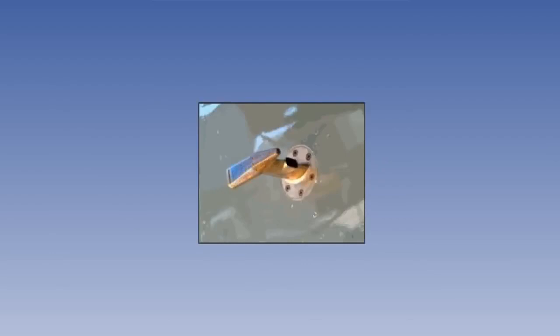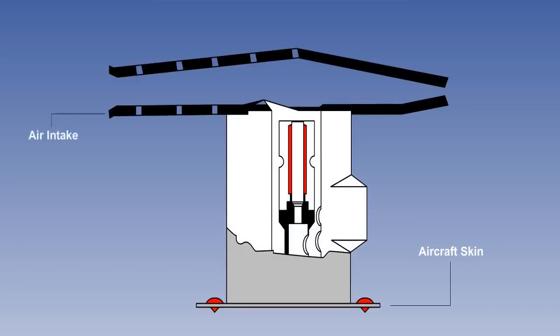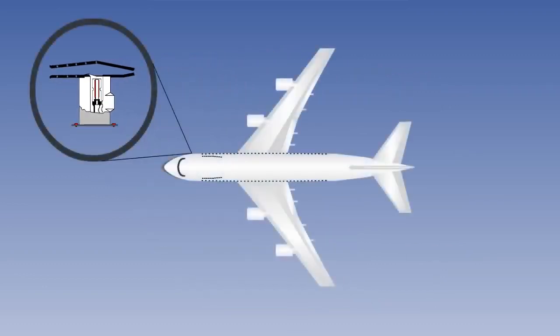Let us now look at a typical total air temperature probe of the type used on a modern high-speed aircraft. The probe is usually constructed from nickel-plated beryllium copper, which provides good thermal conductivity and strength. This type of probe consists of an air intake mounted at right angles to a small hollow strut or casing. Inside the casing is a pure platinum wire resistance sensor. Platinum is used because it has a very high rate of conductivity, gives a rapid response to temperature change, and has a linear resistance-to-temperature relationship. The probe is fixed to the fuselage in a location which minimizes any boundary layer effect, usually the front fuselage.